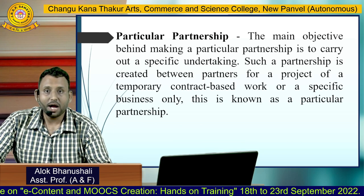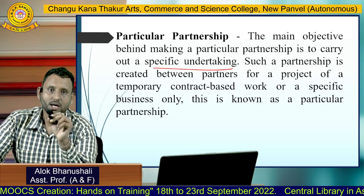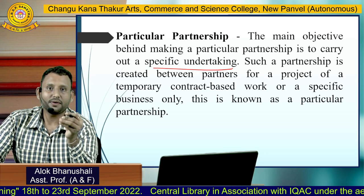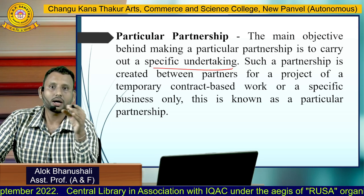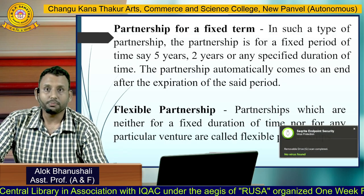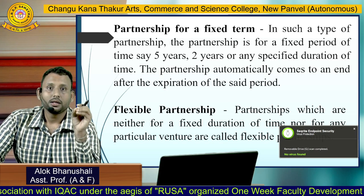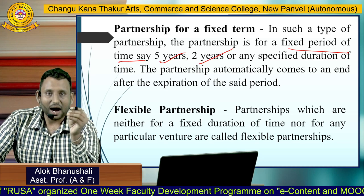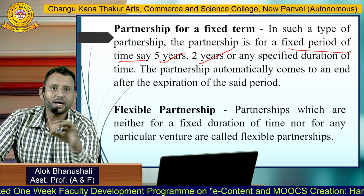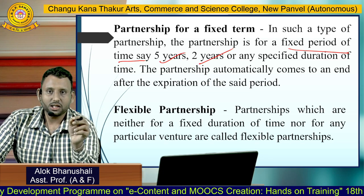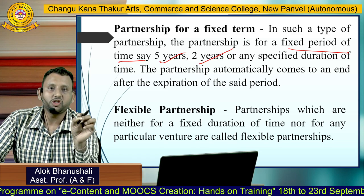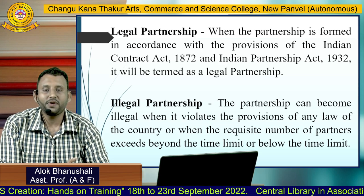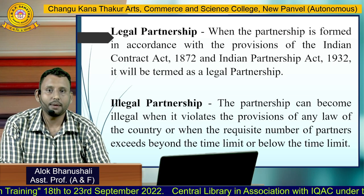Particular partnership: the main objective is to carry out a specific undertaking. Such a partnership is created for a project or temporary contract-based work, and once that work is completed the partnership ends — for example, partners forming a firm to build a bridge, after which the partnership dissolves. Partnership for a fixed term: when the partnership is for a fixed period — five years, two years, or any specified duration — after that duration expires the partnership automatically comes to an end.